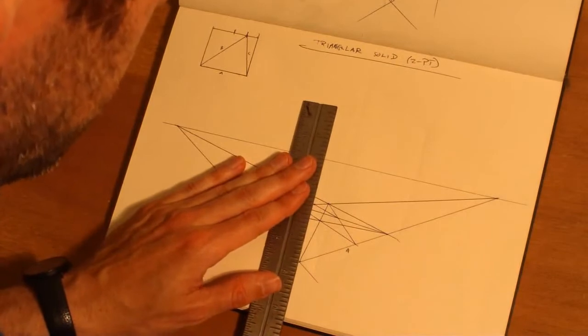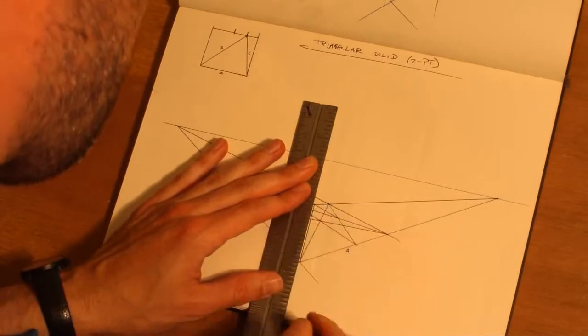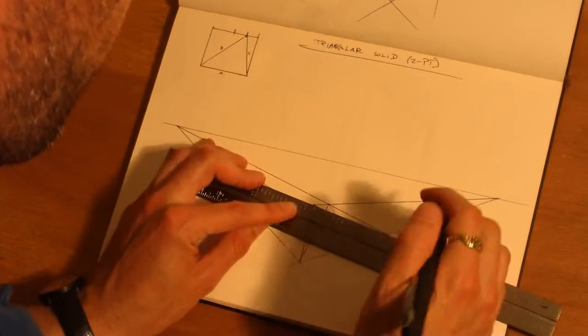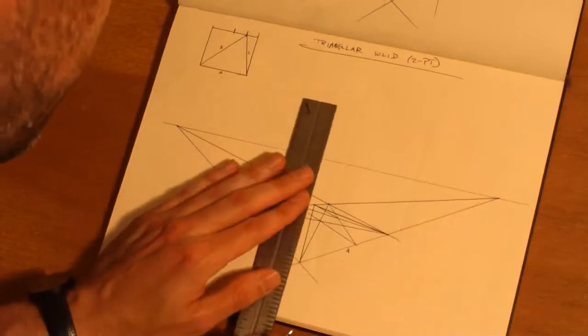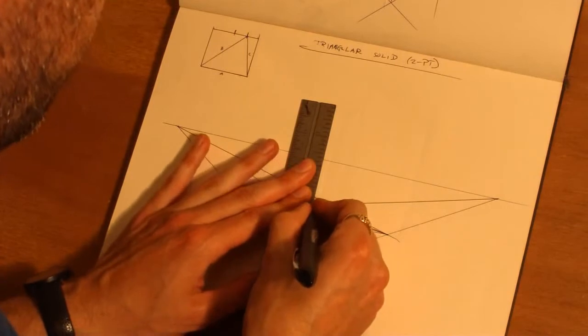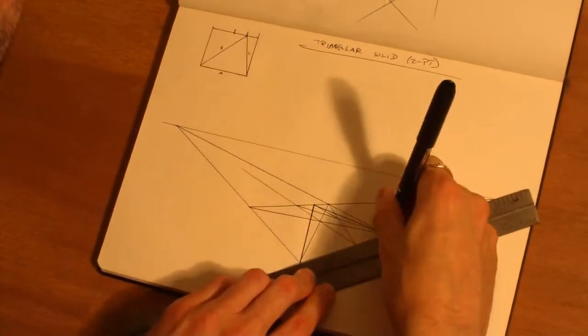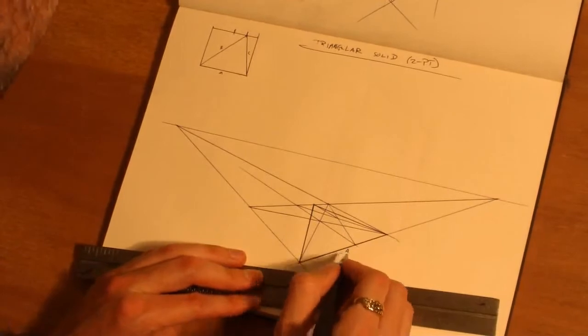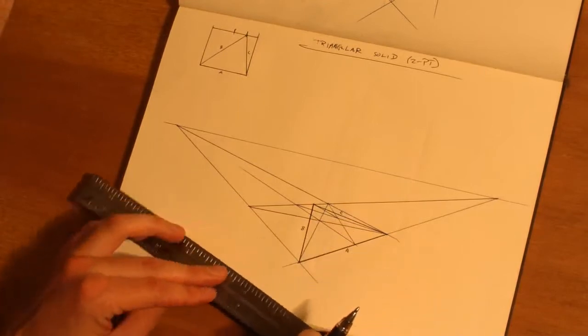So we're gonna go ahead and inscribe this triangle into our square, or rectangle rather. So you'll notice that this looks like the projection of our original solid side put down in perspective. So we've got side A, we've got side B, we've got side C over here.